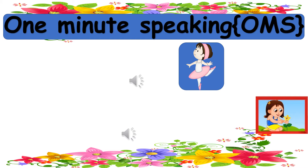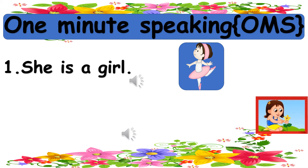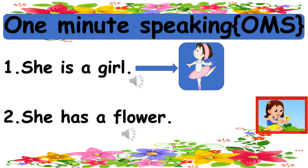Okay boys and girls, let's read the number one sentence. Number one: she is a girl. Again, she is a girl. And let's read the number two sentence. Number two: she has a flower. Number two, she has a flower.